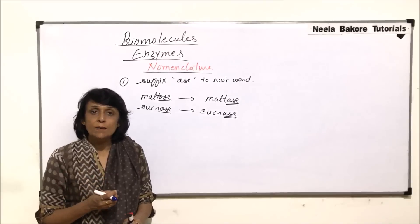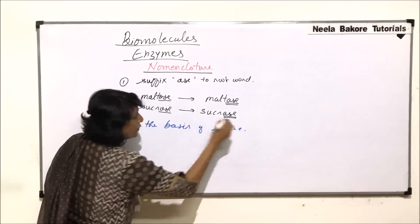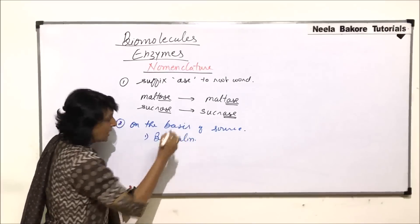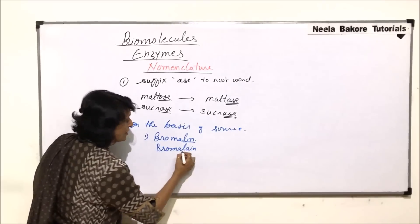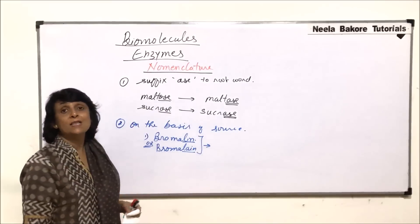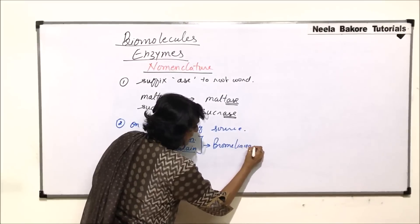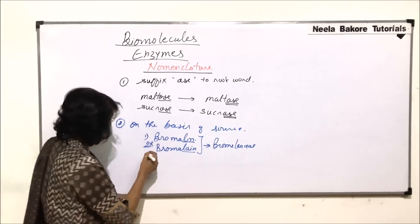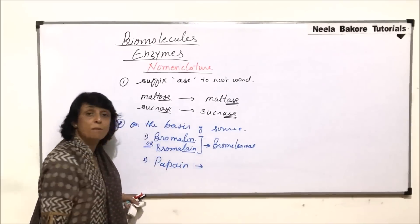The next method is naming an enzyme on the basis of its source — from where it has been obtained. One example is the enzyme bromelain, also written as 'bromelain'. Its source is pineapple, which belongs to the Bromeliaceae family, and so the enzyme is named bromelain, after the family. The second example is pepsin, which is obtained from papaya.